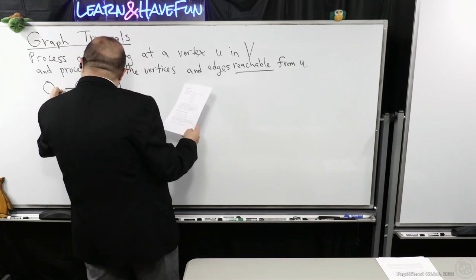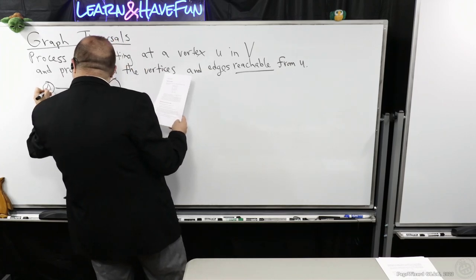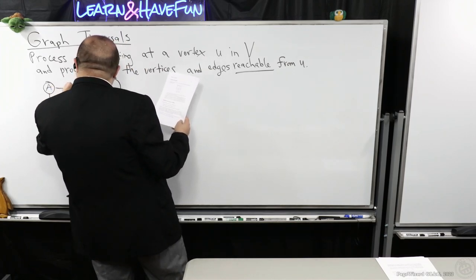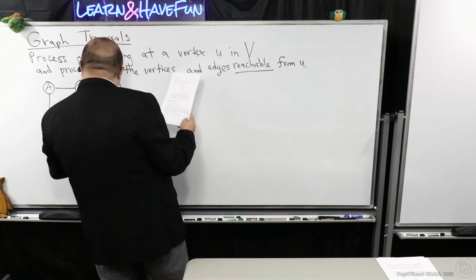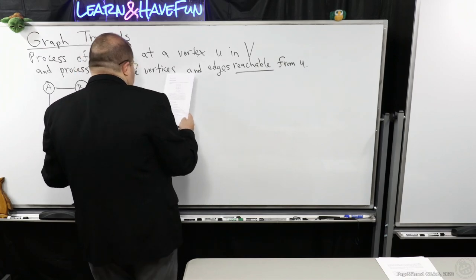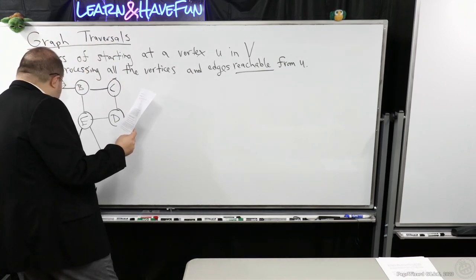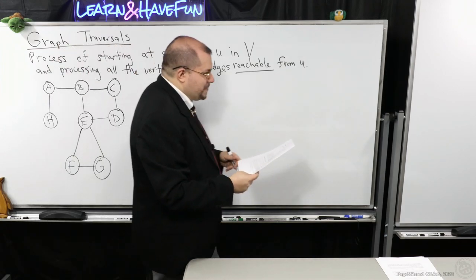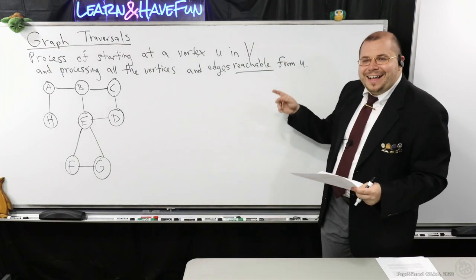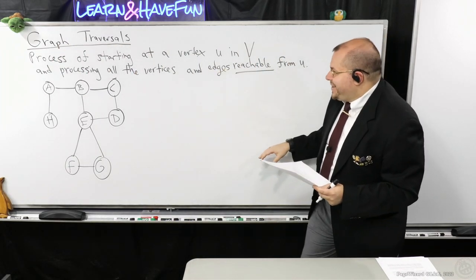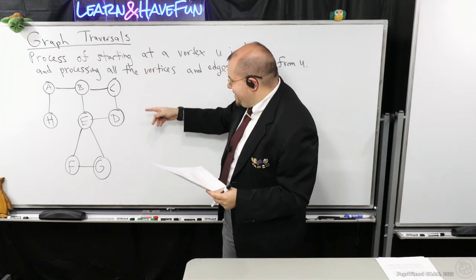Let's draw out a graph here. We have A, B, C, D, E, H, and F and G at the bottom. So we've got ourselves a nice and simple graph here.